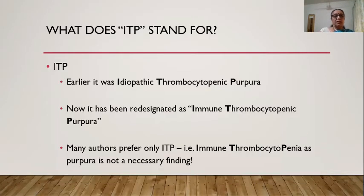The bone marrow picture showed increased megakaryocytes, ranging from immature to mature, and appearing normal overall. Based on this, ITP was considered as the diagnosis.